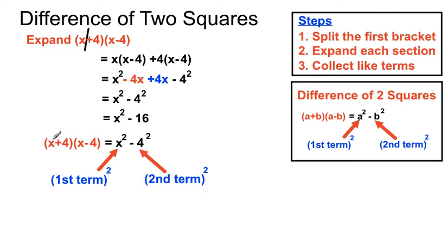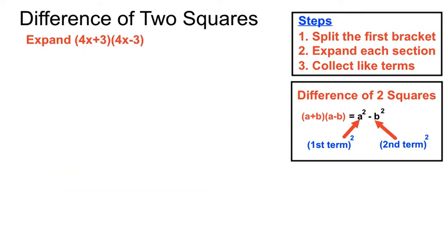Which effectively is the first term squared minus the second term squared. So if we wanted to cut to the chase here we could just square the first term, put a minus in between and square the second term. That's what we'll move to when we get some trickier ones.